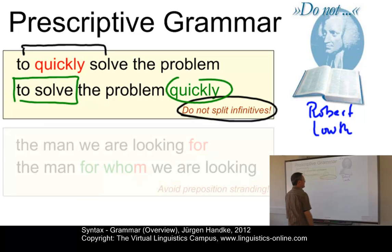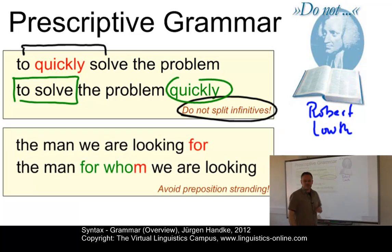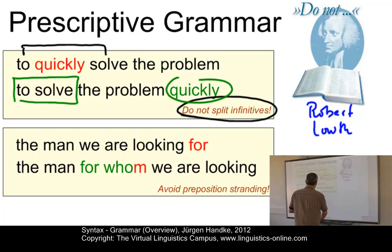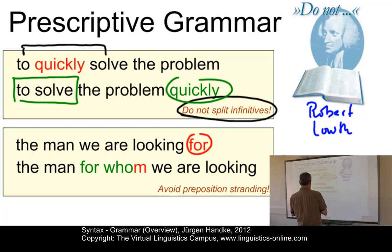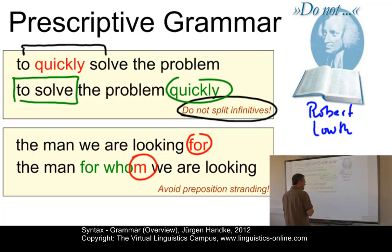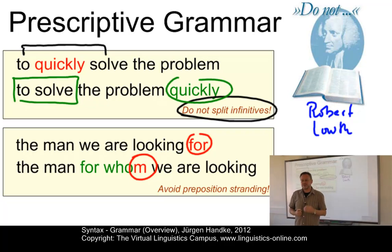Here is another prescriptive rule: avoid preposition stranding. Do not put prepositions at the end of certain constructions. 'This is the man we are looking for' should be avoided. Rather, we should use the construction 'this is the man for whom' — and since we adhere to the prescriptive rules of English, we would even use 'whom' instead of the much more popular 'who'.